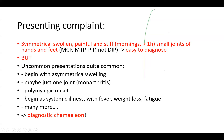It can begin with asymmetrical swelling. It may be just one joint — a friend of mine came to me with just one foot joint of the small toe inflamed, so it took a while to sort out. There might be a polymyalgic onset where the patient complains about pain everywhere, all muscles are sore. It might begin as a systemic illness with fever, weight loss, and fatigue. There are many more presentations, so it's not always easy to diagnose.